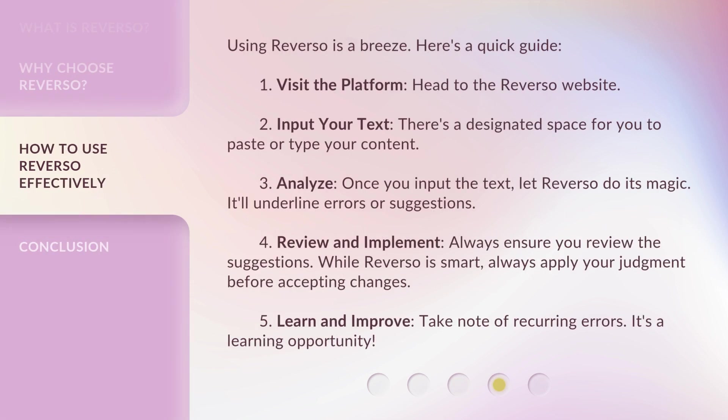Using Reverso is a breeze. Here's a quick guide. One: visit the platform — head to the Reverso website. Two: input your text — there's a designated space for you to paste or type your content. Three: analyze — once you input the text, let Reverso do its magic. It'll underline errors or suggestions.